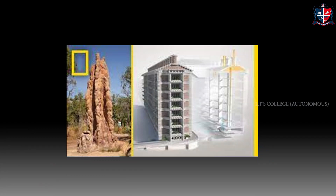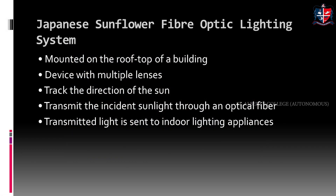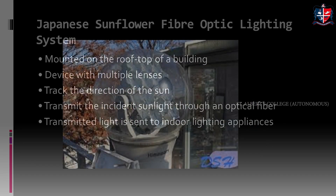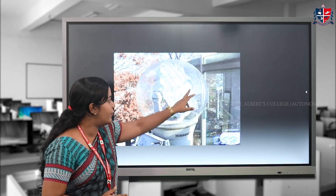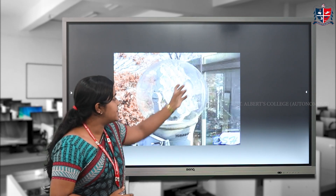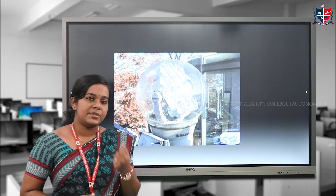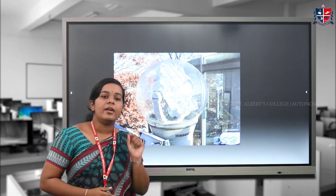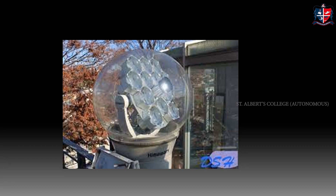Next is the Japanese sunflower fiber optic lighting system. This is mounted at the top of buildings and consists of a series of cells that trap sunlight. It does not convert light energy, but simply traps sunlight and transmits it through fiber optic cables into the building for indoor lighting purposes.